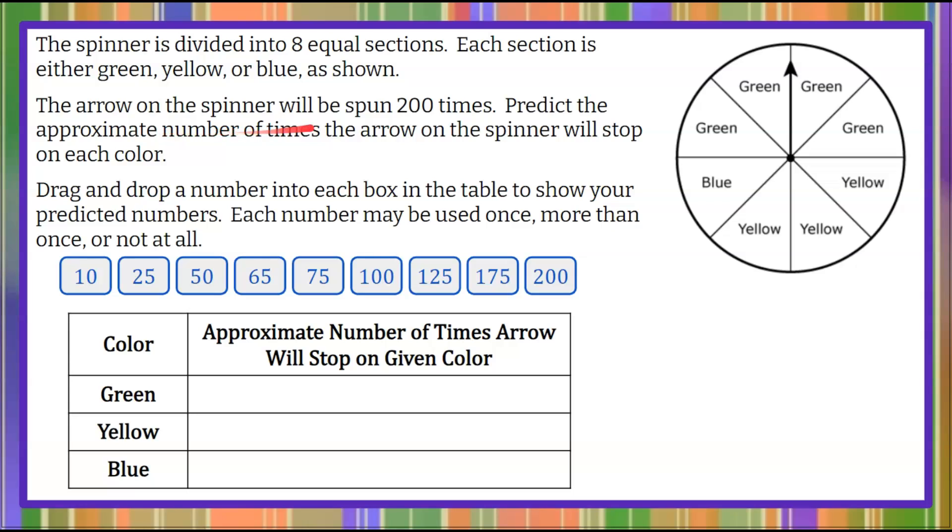The arrow on the spinner will be spun 200 times. Predict the approximate number of times the arrow on the spinner will stop on each color. We're going to drag and drop a number into each box in the table to show your predicted numbers. Each number may be used once, more than once, or not at all.